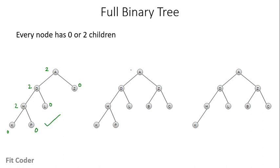Similarly in the second case, A has two children, D and H also have two children, Z also has two children, and all the leaf nodes have zero children — so this is also a full binary tree. In the third case, H has only one child, so this one is not a full binary tree.